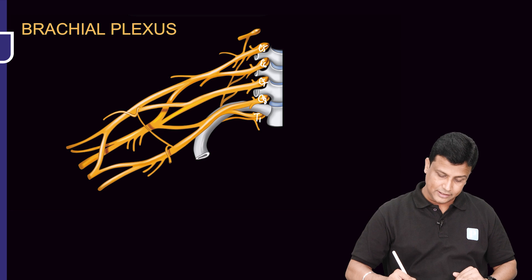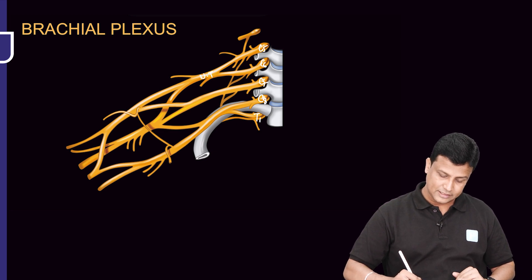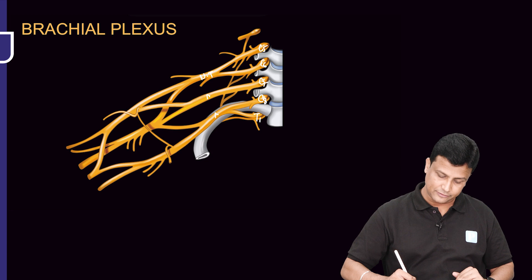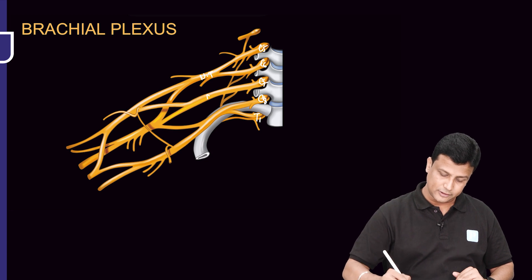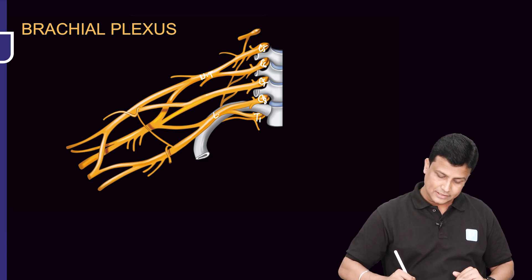C5 and C6 will combine to form the upper trunk, and C8 and T1 will combine to form the lower trunk.